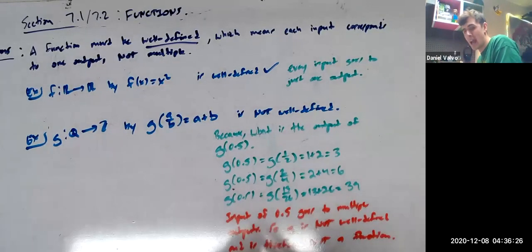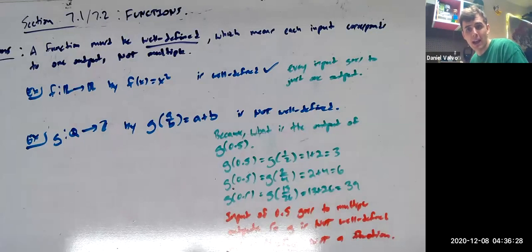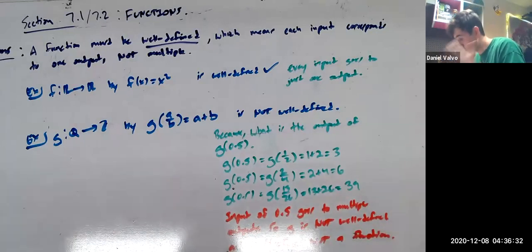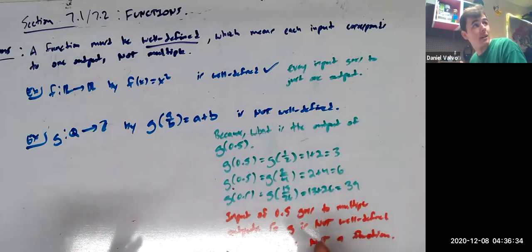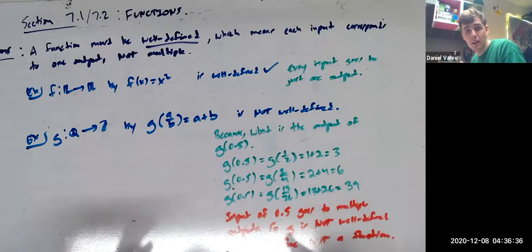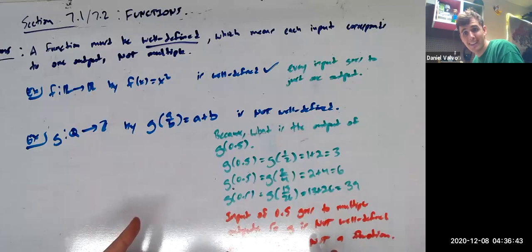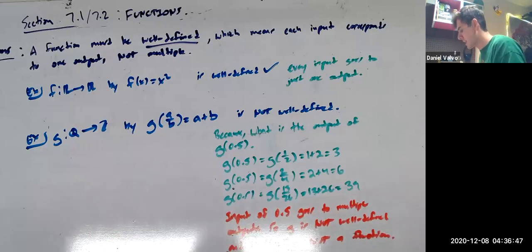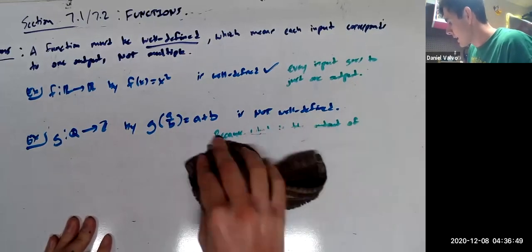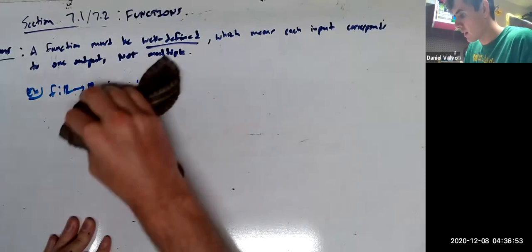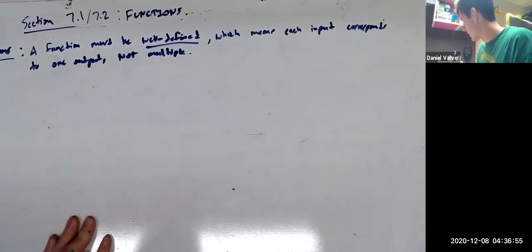So g is not well defined, and is therefore not a function. The function has to be well defined because you need to know, if you plug in something, what the output is — and you just don't know what 0.5 maps to here. Any questions on that? Hope that makes sense. Again, we'll do a little more of this next time. And that's what well defined is.